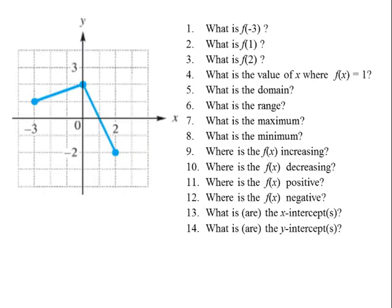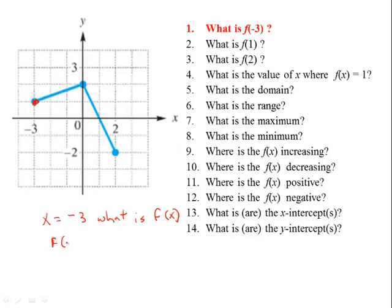Question number 1: What is f of negative 3? f of negative 3 means when x equals negative 3, what is the y value? So when x is negative 3 — here's negative 1, negative 2, negative 3 — our y value is 1. So we say f of negative 3 equals 1.